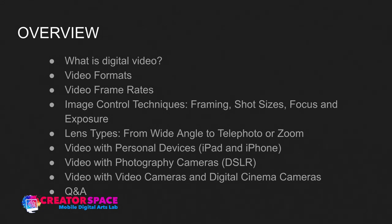So what is digital video? Digital video is a series of still images or frames captured by a light-sensitive sensor and translated to digital data — ones and zeros. That data then gets stored somewhere. Storage options include solid state memory cards, digital tape, hard drives, thumb drives, or even the cloud. That's what digital video is — the key is that it's still images and frames.